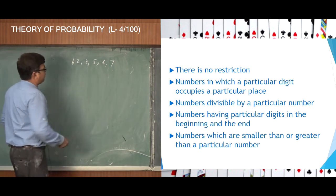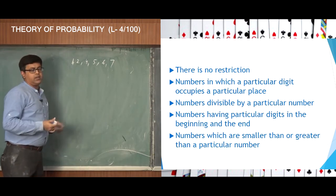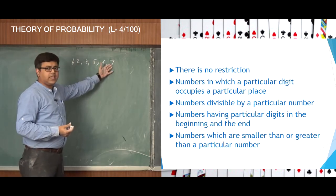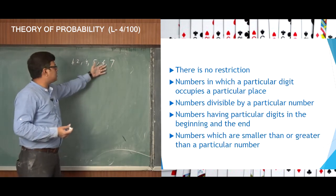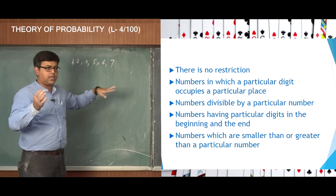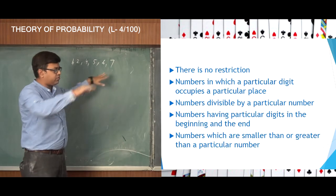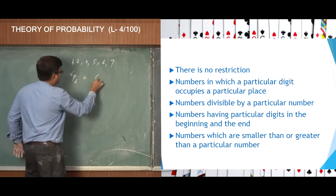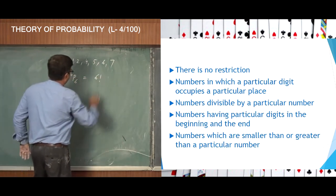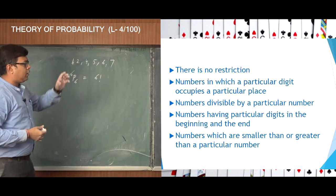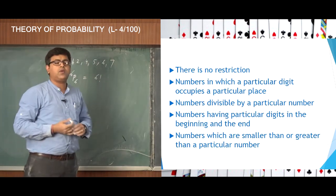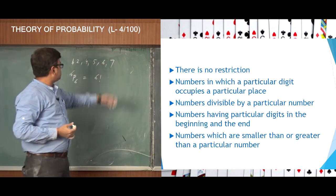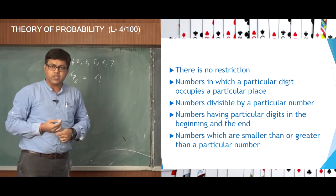The first condition: there is no restriction. When there is no restriction, it is the simplest case. There are 6 digits, so you can arrange them anywhere — it is 6P6, which is 6 factorial. So 6 factorial is the number of ways by which we can form a 6-digit number with the digits 1, 2, 4, 5, 6, 7.